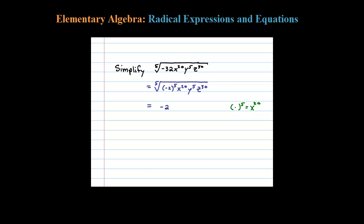Right, power to a power you multiply, so 4 times 5 is 20. So for x to the 20th, the fifth root of x to the 20th is x to the fourth.